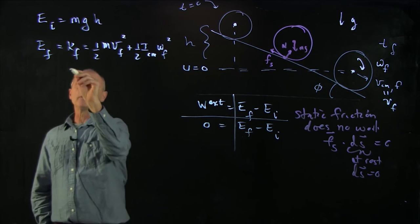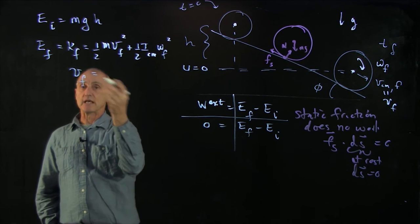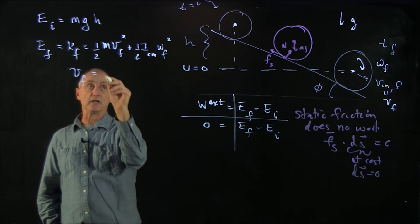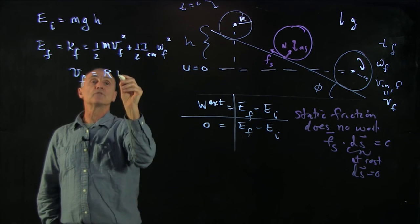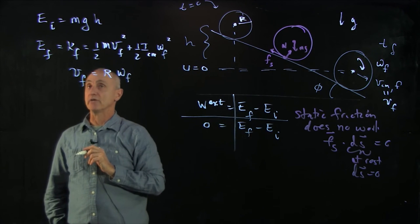Now, the rolling without slipping condition is that the translational center of mass speed is equal to the radius of the wheel, r, times the angular speed, omega final.